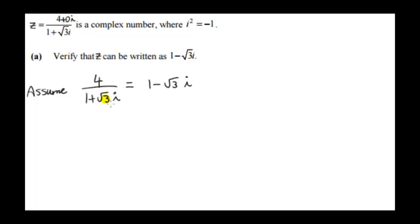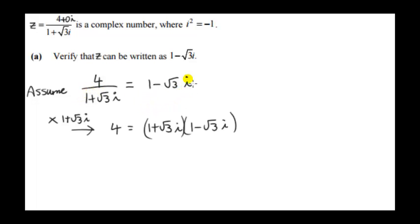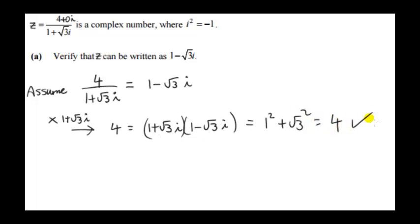The other way to prove this is to assume that 4 over (1 plus root 3i) equals 1 minus root 3i and see what the consequences are. Multiply both sides by 1 plus root 3i to clear the denominator. The right-hand side becomes (1 minus root 3i)(1 plus root 3i) — a complex number times its conjugate — which equals the real part squared plus the imaginary part squared, and that is indeed 4. So reversing the step confirms the result is true.